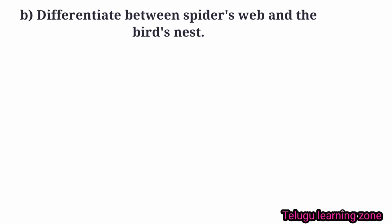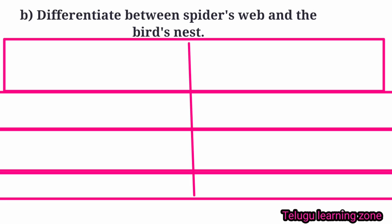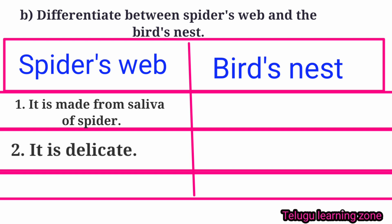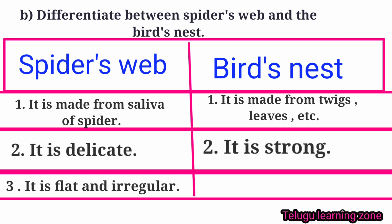Question B: Differentiate between a spider's web and a bird's nest. Answer. Spider's web: It is made from the saliva of a spider. It is delicate, flat and irregular. Bird's nest: It is made from twigs, leaves, etc. It is strong and in the shape of a bowl.